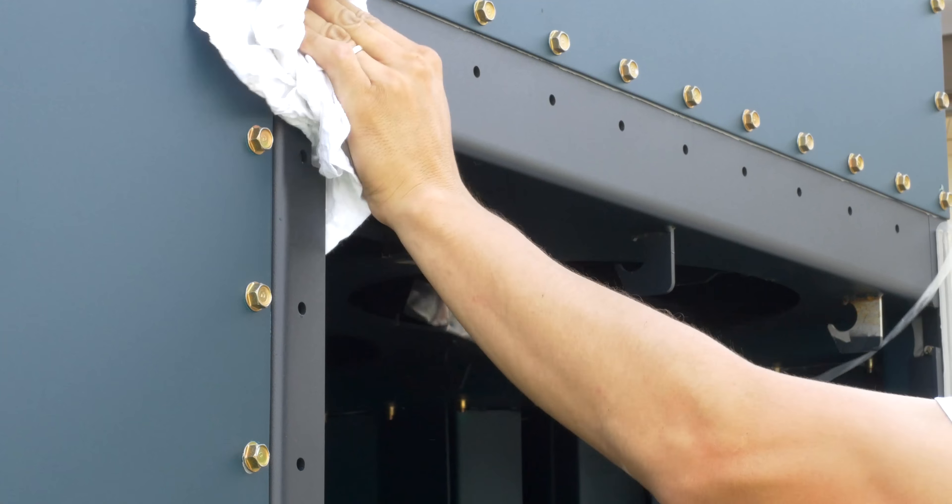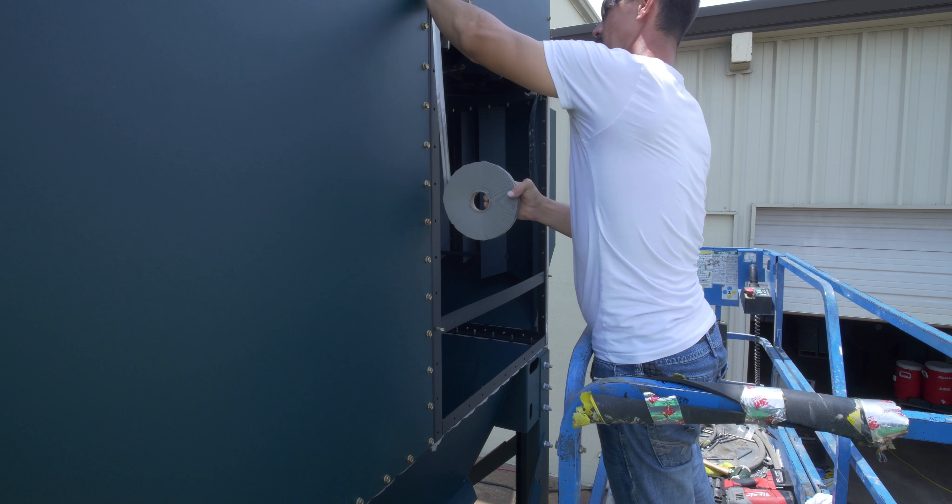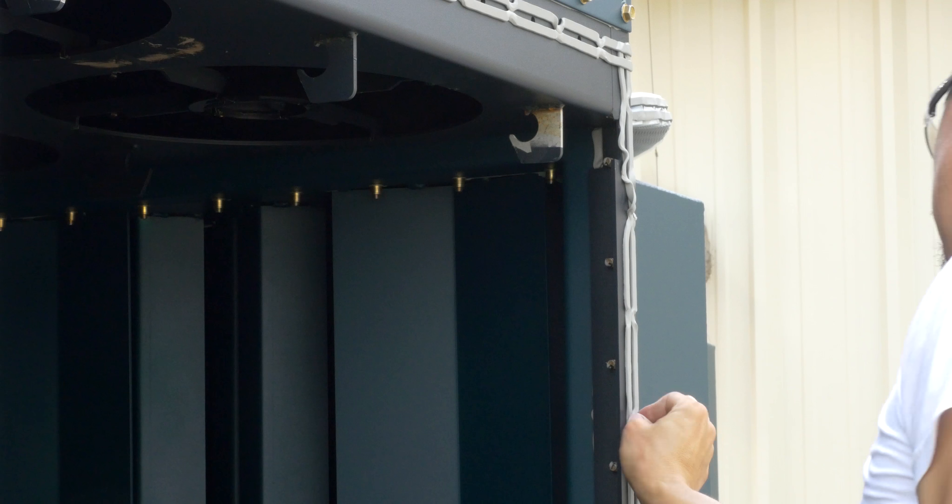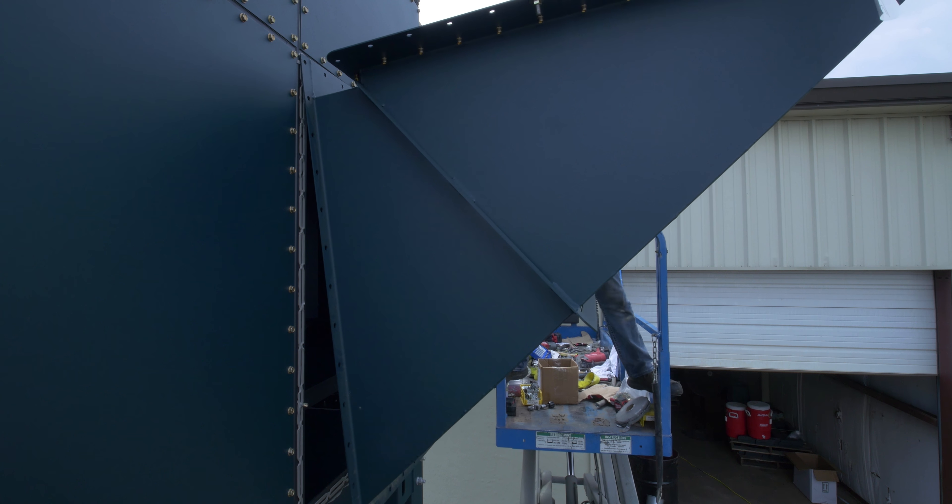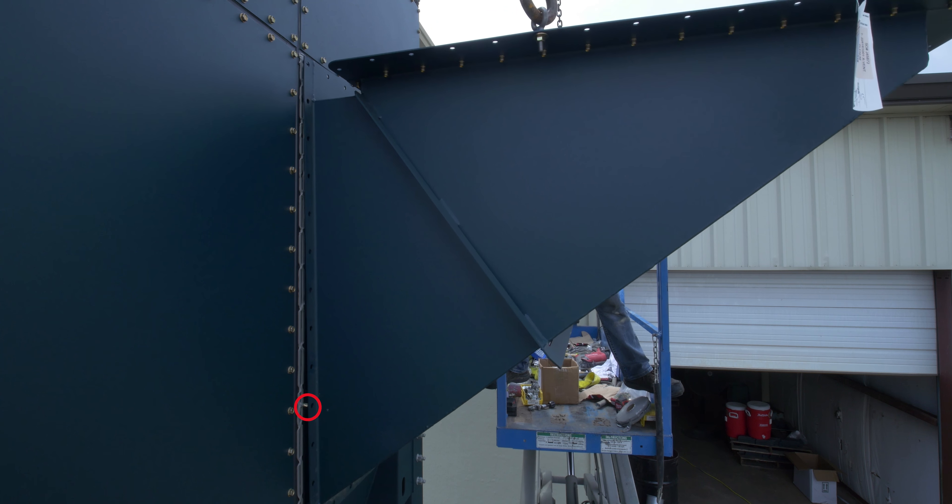To install the X-VENT plenum, clean and apply rope caulk to the surface located on the filter module. Lift the plenum and slowly guide it into place using the bottom guide bolts.